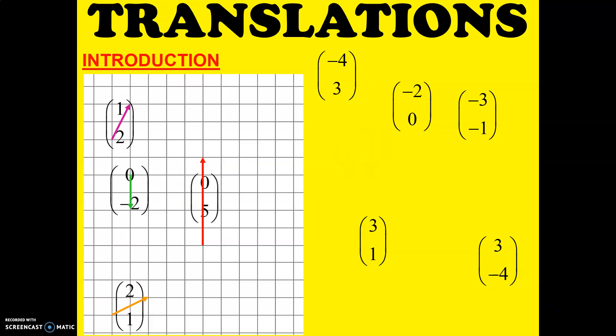This is 0, negative 2. Zero because you don't go to the right and you don't go to the left, but you go down 2 steps.